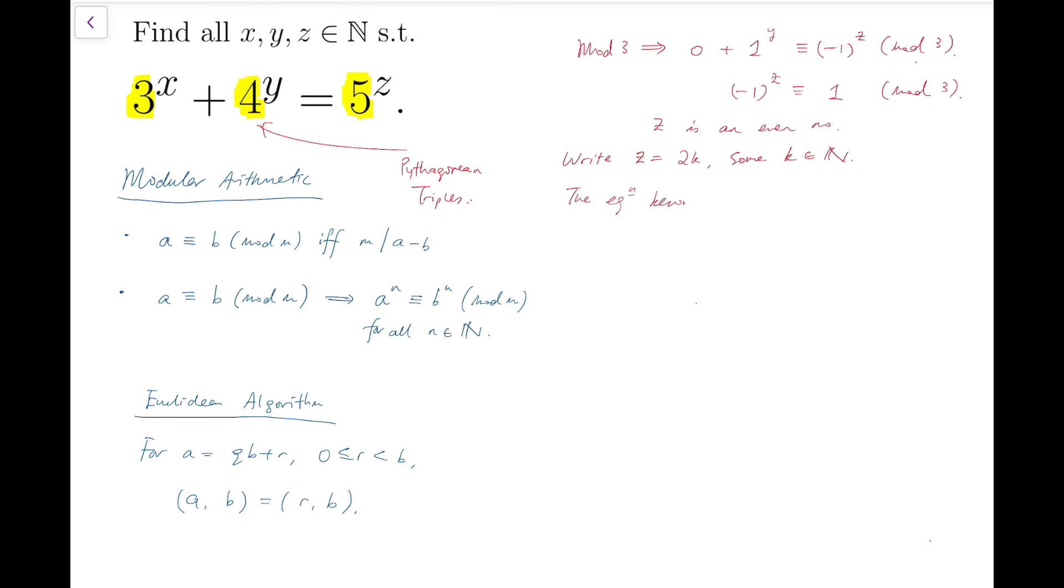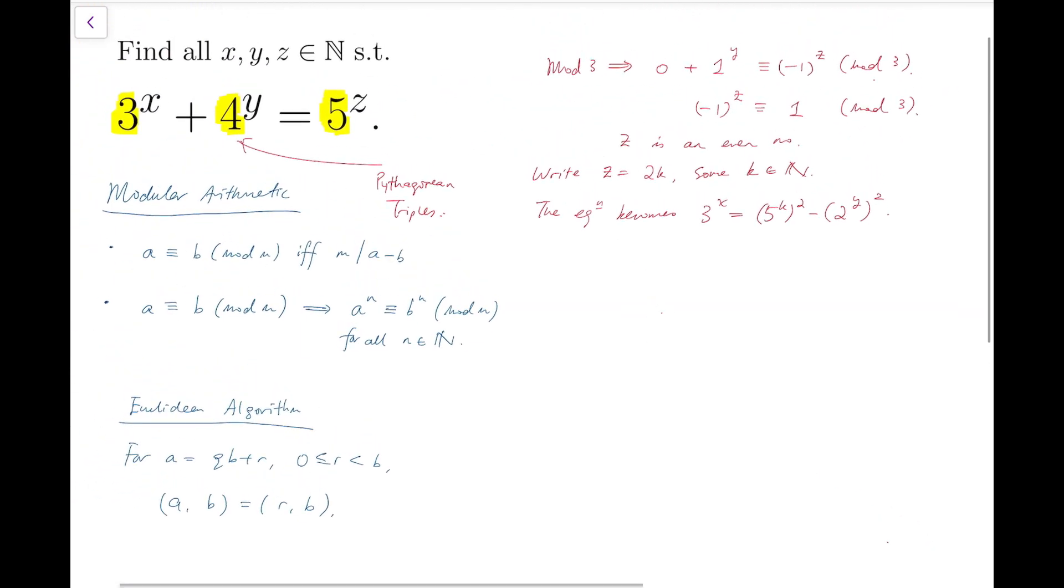Now the equation becomes 3 to the x equals 5 to the k whole squared minus 2 to the y whole squared. Then notice that the right-hand side is now a difference of squares, so I can factorize it. And we have 5 to the k minus 2 to the y times the sum of 5 to the k and 2 to the y equals to 3 to the power of x.